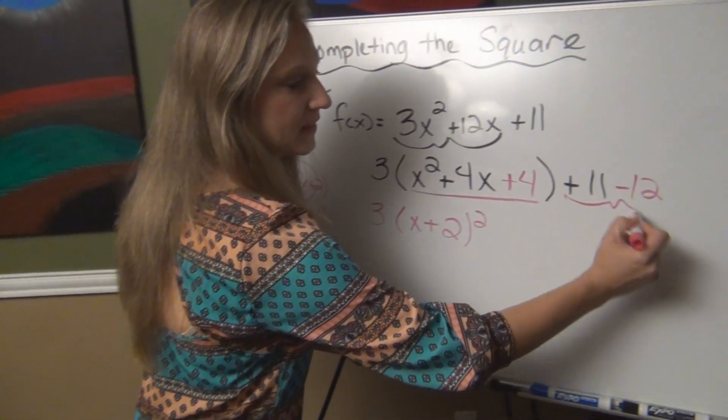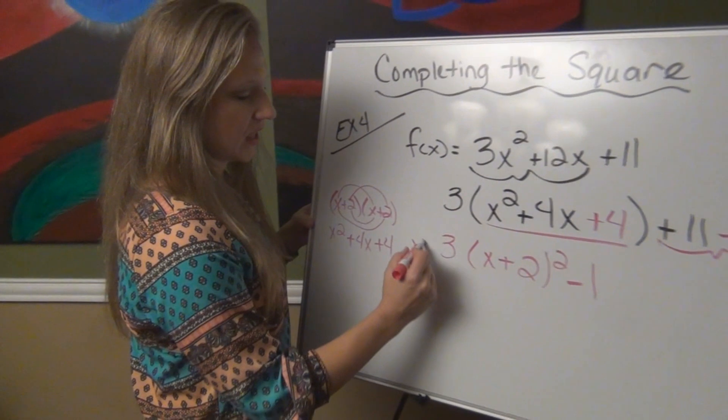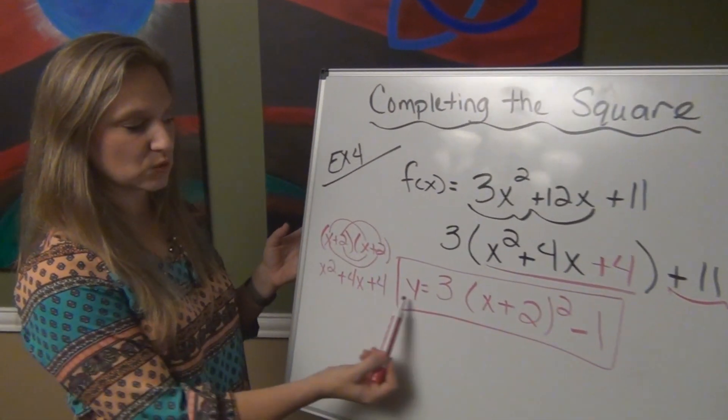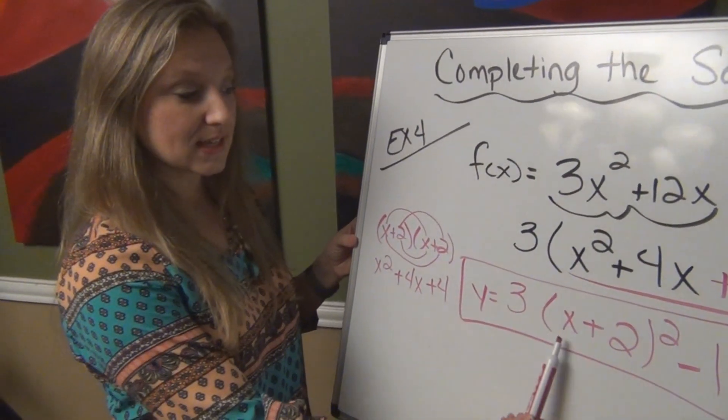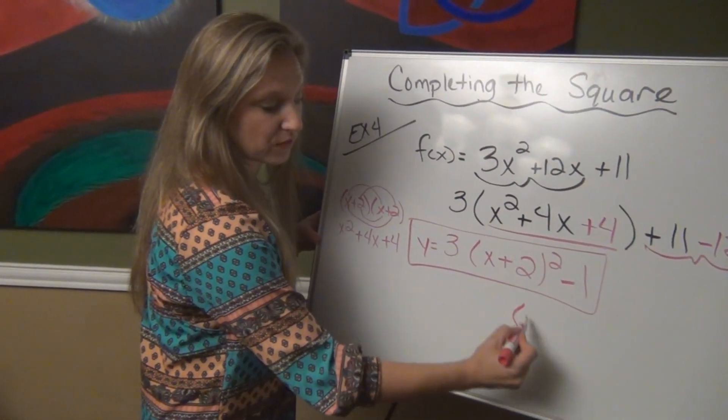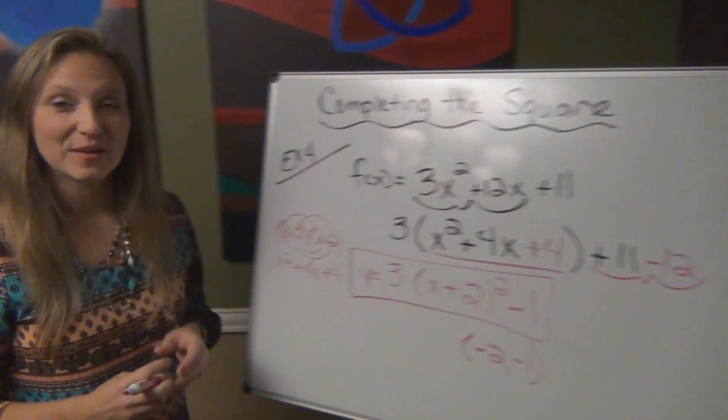All right, last step is to combine these numbers here at the end. 11 minus 12 is negative 1. So my equation in vertex form is y equals 3 times x plus 2 squared minus 1, which tells me I have a vertex here at negative 2, negative 1.